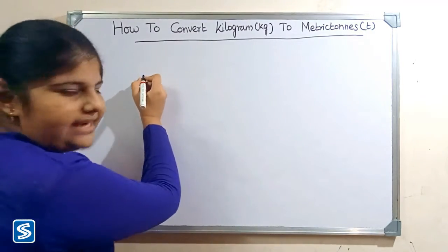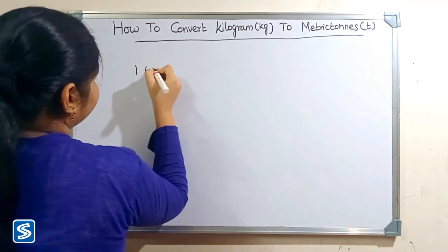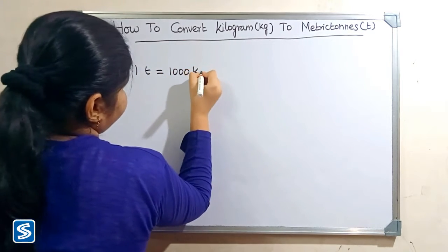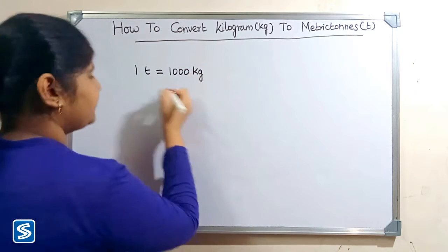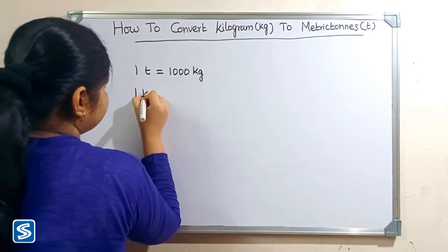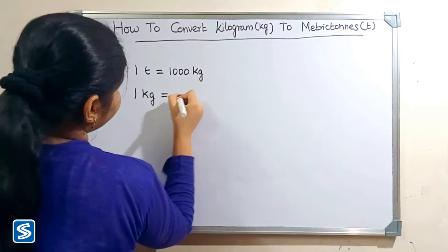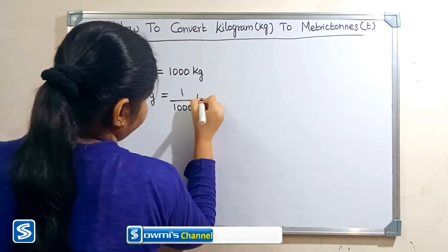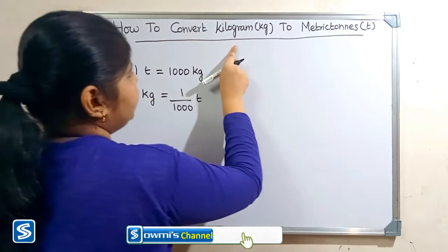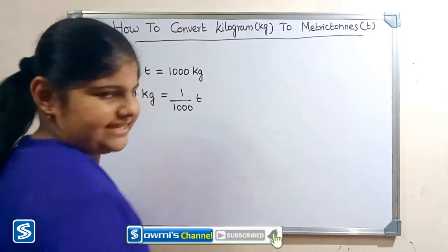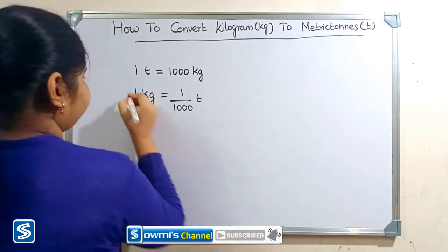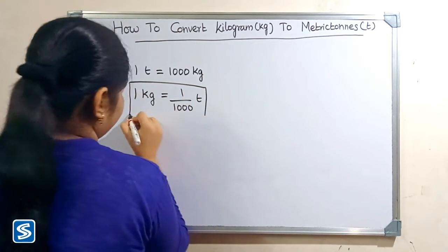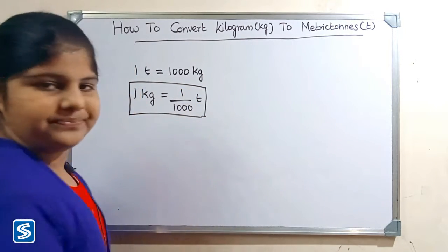We already know that 1 ton is equal to 1000 kilograms, so 1 kilogram is equal to 1 by 1000 tons. So the formula for converting kilograms into metric tons is: 1 kilogram is equal to 1 by 1000 tons.